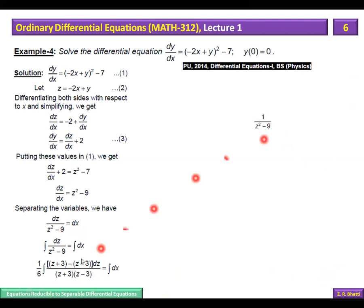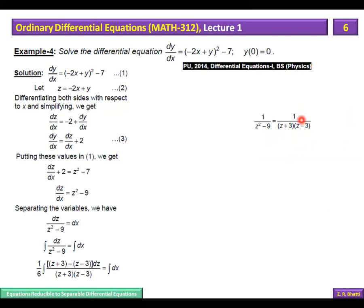After substitution we encounter 1/(z² − 9). Consider 1/(z² − 9): the denominator factors as (z+3)(z−3). Now we apply the partial fraction technique. If we can add or subtract the denominator's factors to form the numerator, then partial fractions can be found directly. Let's see how this works.